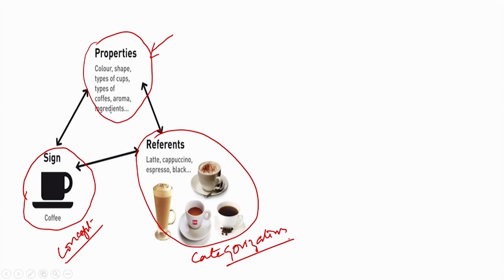Coffee as a concept has properties: shape, type, colour, aroma, ingredients, and so on. In terms of categorization, the references are latte, cappuccino, espresso, black coffee, iced coffee, Irish coffee, or other forms of coffee. This is the concept and these are the properties of categorization — categorization is done based on those properties, since most types of coffees share these properties.